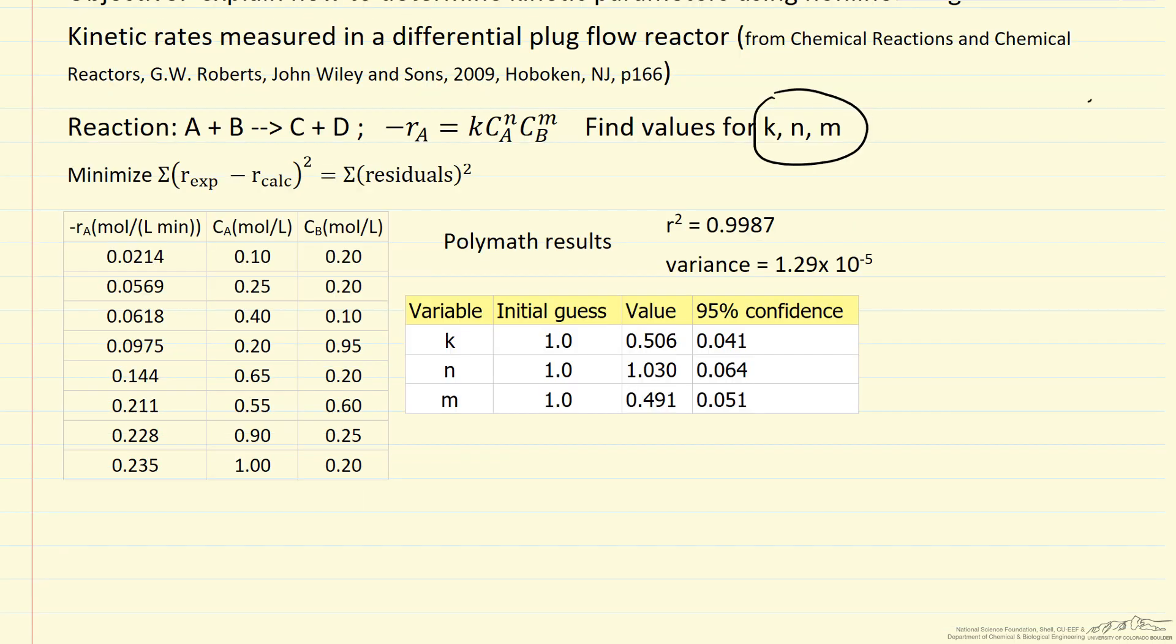The R squared value, which is an indication of how good the fit is - the closer R squared is to one, the better the fit - is a pretty good value, very close to one. The variance is small.